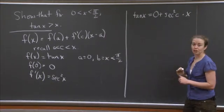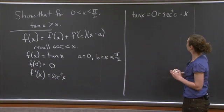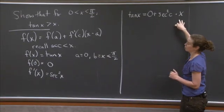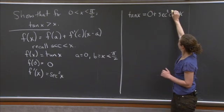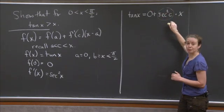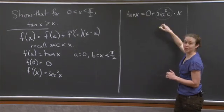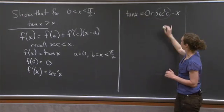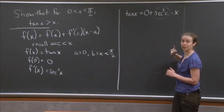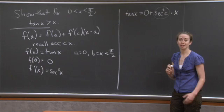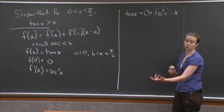So we're very close to showing tan x is always bigger than x. In fact, you can see very easily what we need to show. We just need to show that sec²c is bigger than 1 in our region of interest, and that would do it. Because then the right-hand side would be bigger than 1 times x, so that would be sufficient.